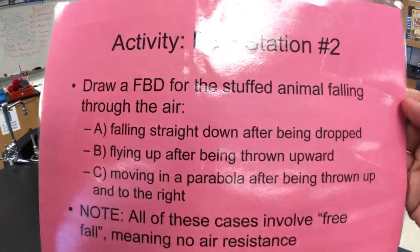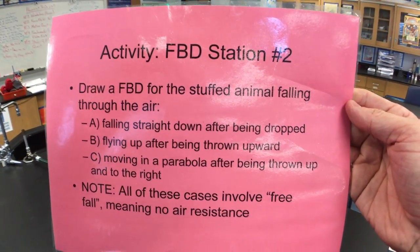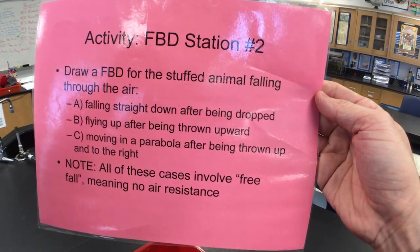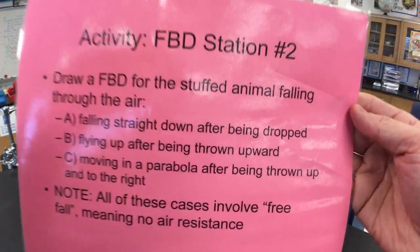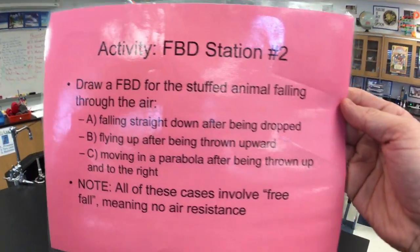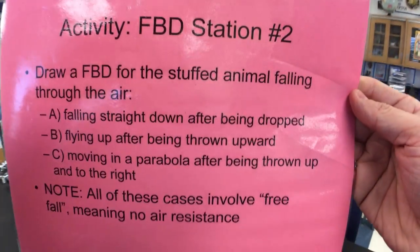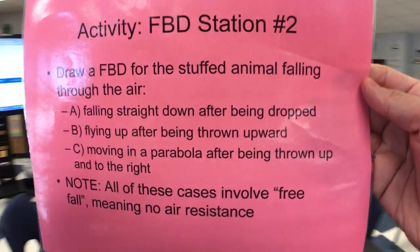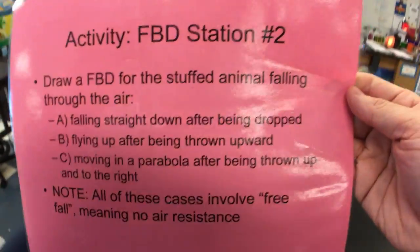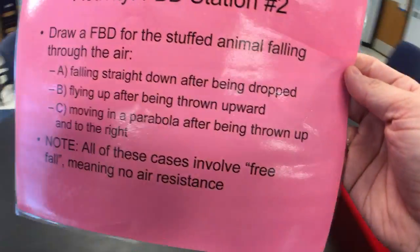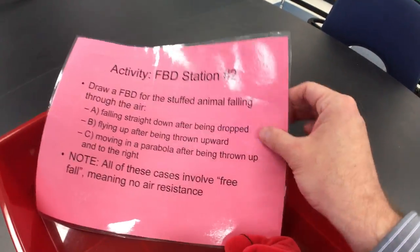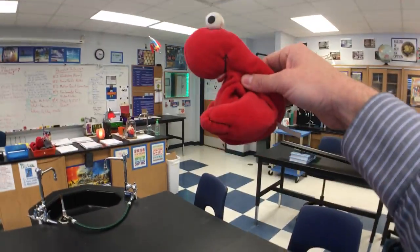Draw a free body diagram for the stuffed animal falling through the air. A, falling straight down after being dropped. B, flying up after being thrown upward. C, moving in a parabola after being thrown up and to the right. Note: all of these cases involve free fall, meaning no air resistance.